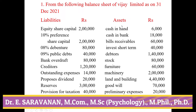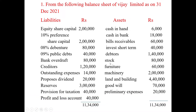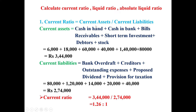Assets: Cash in Hand 6,000, Cash at Bank 18,000, Bills Receivable 60,000, Short-Term Investment 40,000, Debtors 1,40,000, Stock 80,000, Furniture 60,000, Machinery 2 lakhs, Land and Building 4,40,000, Goodwill 70,000, Preliminary Expenses 30,000. Balance sheet total: 11,34,000. Calculate: Current Ratio, Liquid Ratio, and Absolute Liquid Ratio.